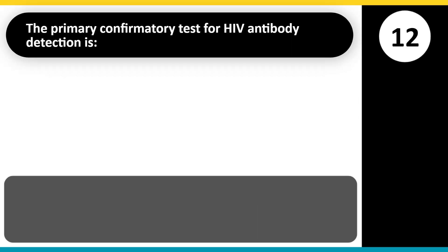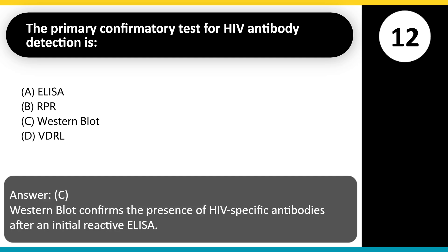The primary confirmatory test for HIV antibody detection is: A. ELISA. B. RPR. C. Western blot. D. VDRL. Answer: C. Western blot confirms the presence of HIV-specific antibodies after an initial reactive ELISA.